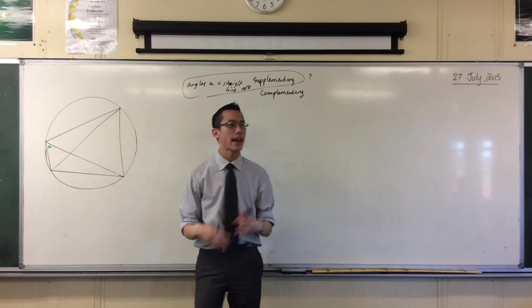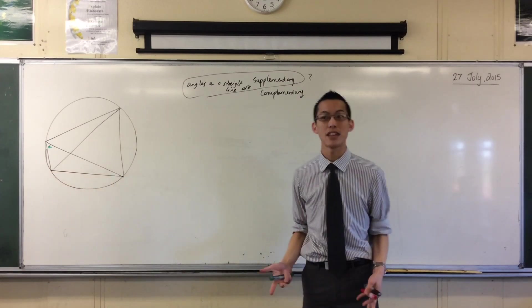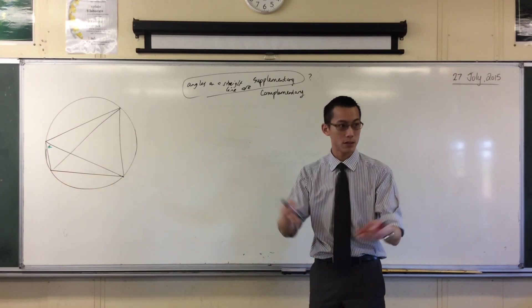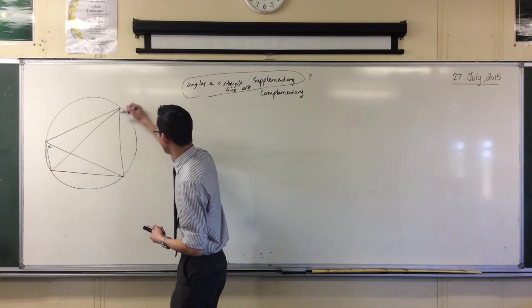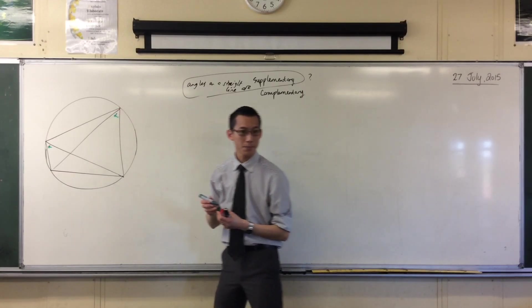So being that it's standing on that arc, any other angle standing on the same arc, which is also in the circumference, will also be alpha. So do you see it? It's up in the top right, isn't it? There's alpha. Got it?